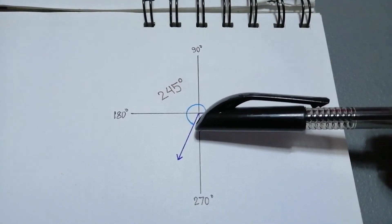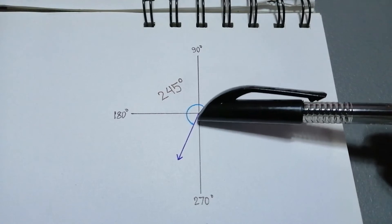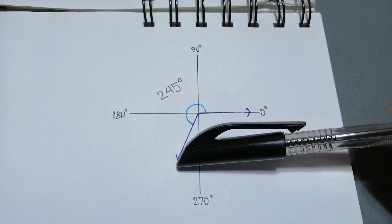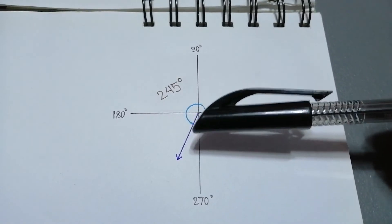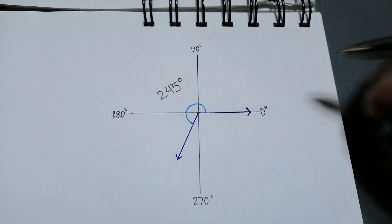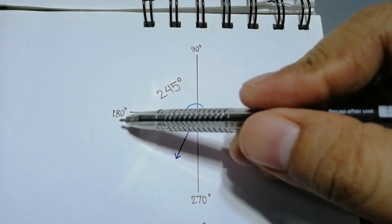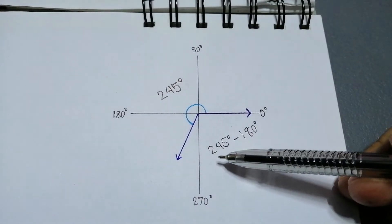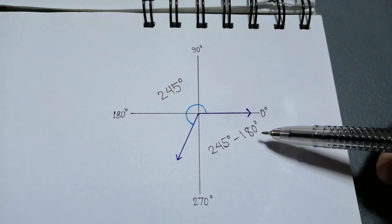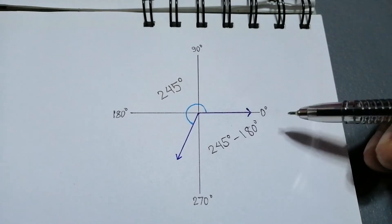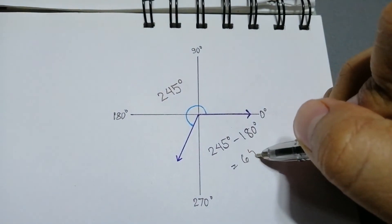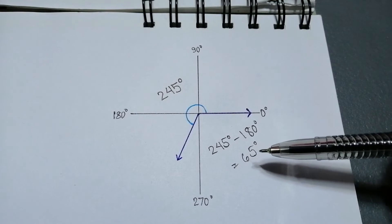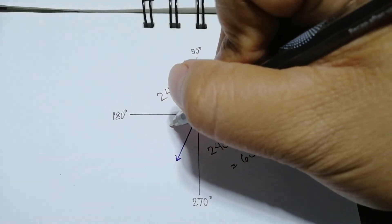We can only form an acute angle with our terminal side and the negative x-axis. But since it is beyond 180 degrees, to determine our reference angle, all we have to do is simply subtract our given angle by 180 degrees. That is, 245 degrees minus 180 degrees, which equals 65 degrees. So the reference angle of 245 degrees is equal to 65 degrees.